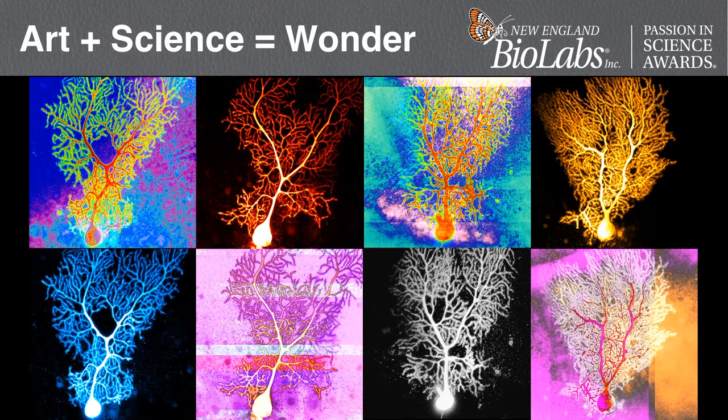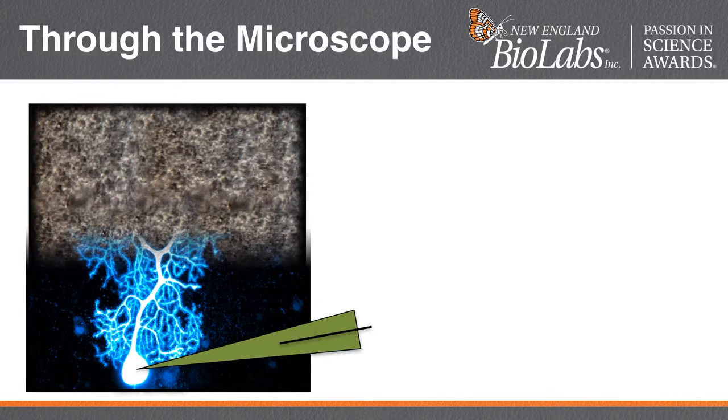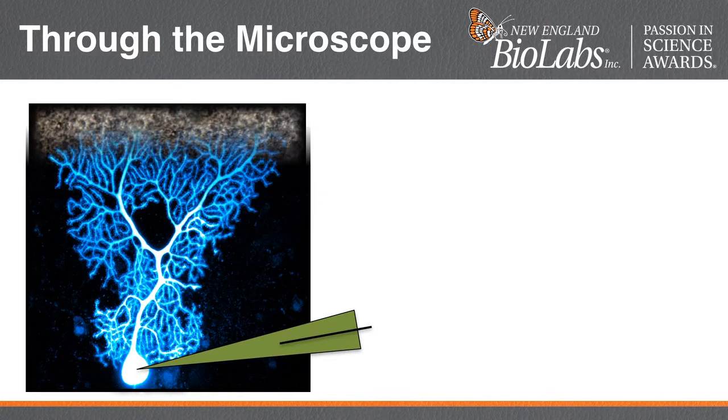I use a technique called patch clamp electrophysiology in combination with calcium imaging. What this means is that I take a brain slice, find a soma — meaning that there's a neuron there, since we can't see the dendrites — and I patch the neuron, which basically means attach a little micro pipette to the soma, open the membrane, and use the pipette as a tube to flow fluorescent dyes into the neuron. After about 30 or 40 minutes, this is what results. It's really beautiful — I'm struck every single time when I see these under the microscope.